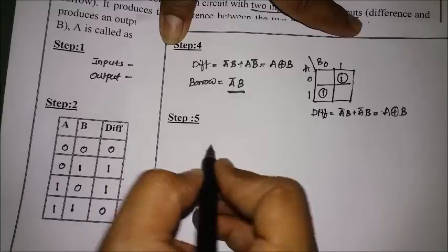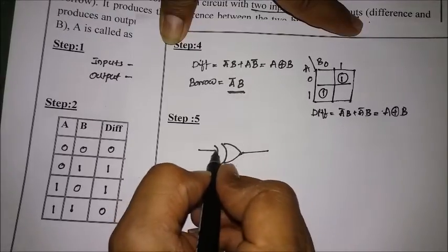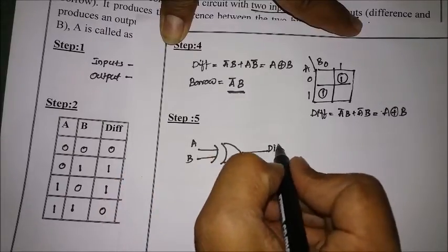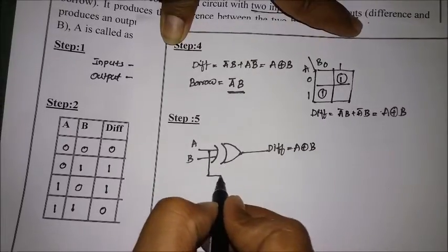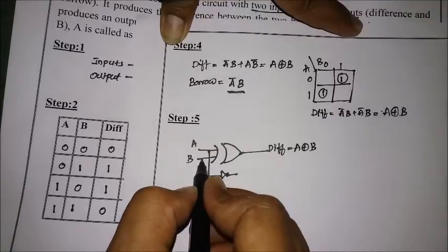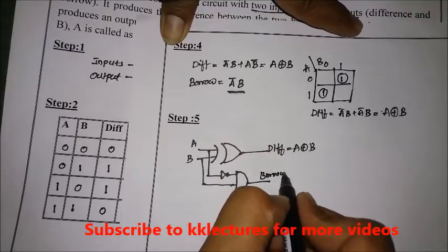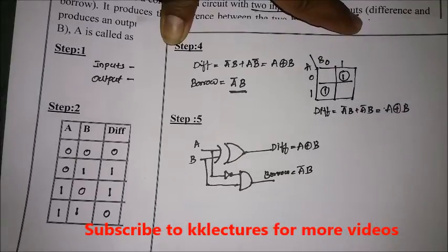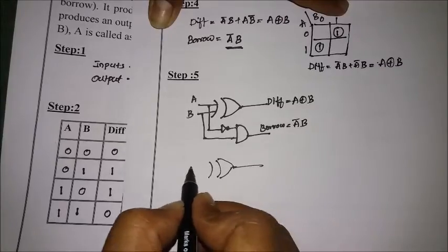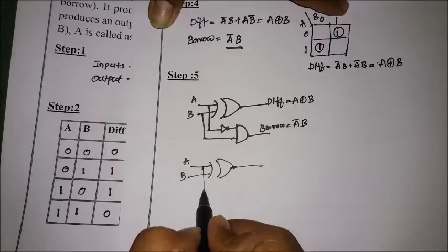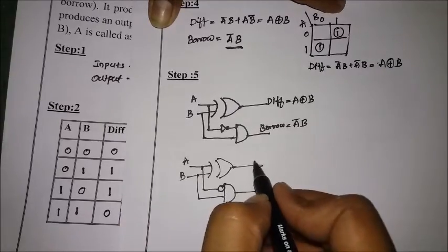Step five is to draw the logic circuit. For the difference, I use one XOR gate with inputs A and B, giving difference = A⊕B. For the borrow, I need the complement of A, so I take A through a NOT gate and AND it with B to get borrow = Ā·B. Alternatively, instead of using a NOT gate, I can draw an AND gate with a bubble on input A, which is equivalent to the NOT gate. This also represents the half subtractor.